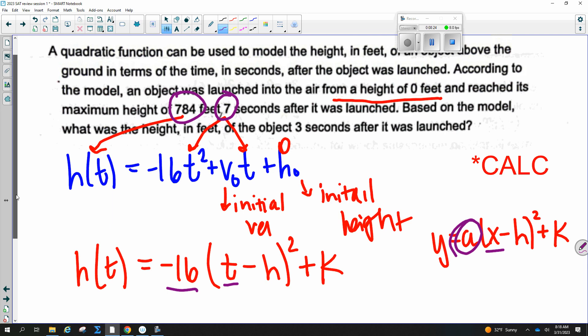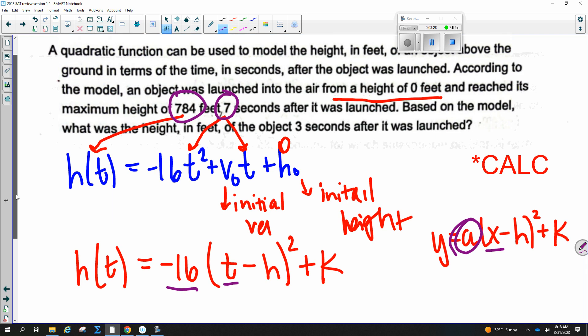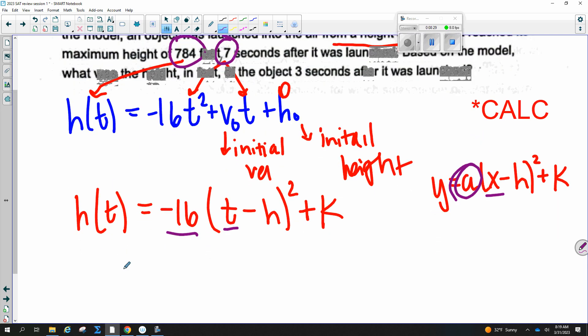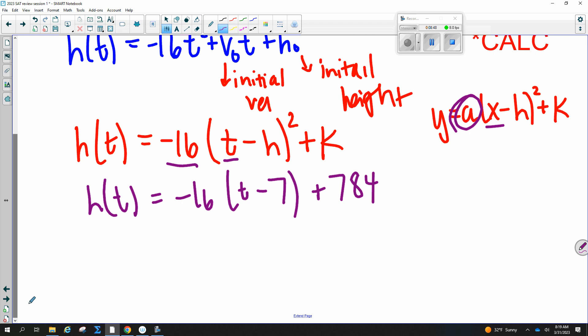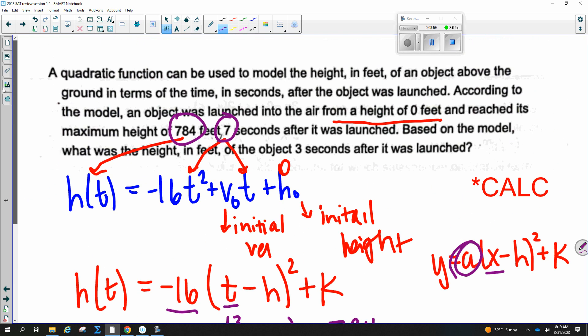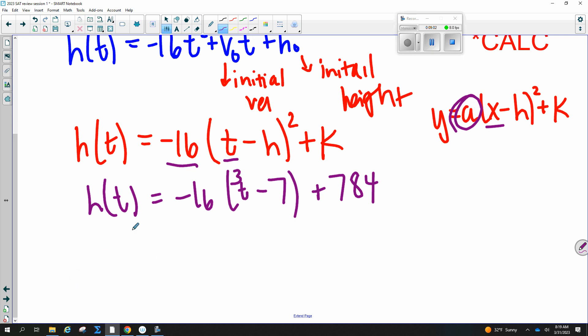Based on the model, what was the height in feet of the object 3 seconds after it was launched? So we know the maximum now is minus 7. That H, by the way, represents X time. Plus 784. So there's our maximum amount. And now we can also plug in the 3. So what is the height of the object 3 seconds after it's launched? So you can plug in 3 for time and get your answer. You are allowed to use a calculator on this one. And then you're done.